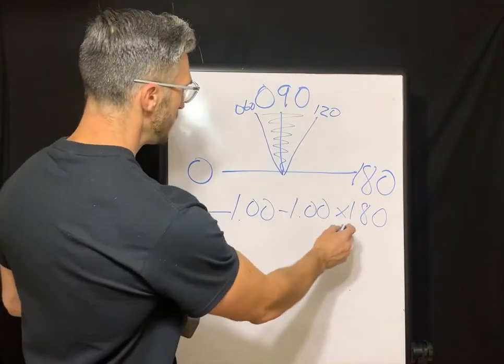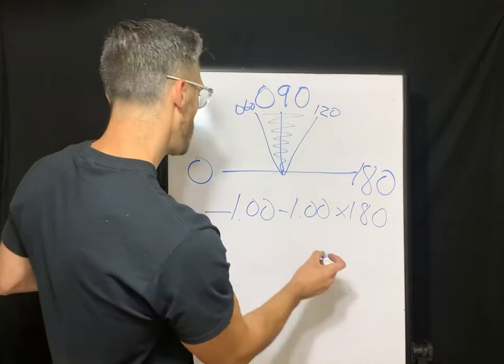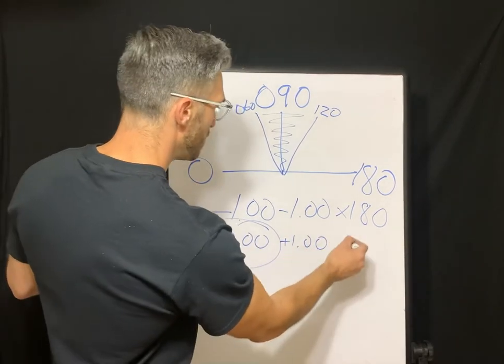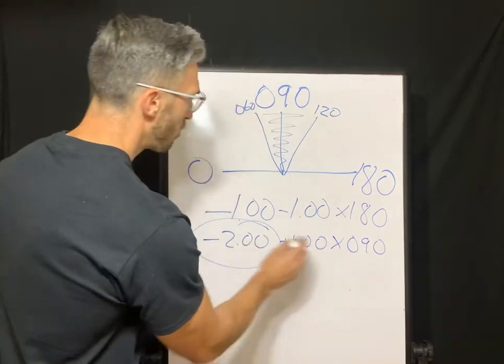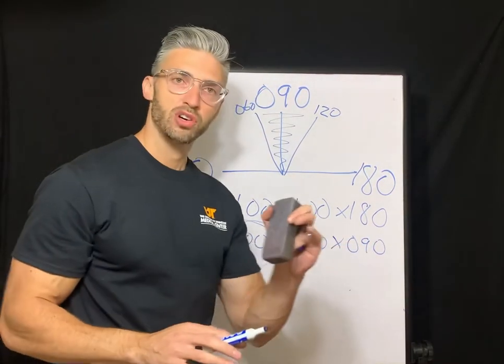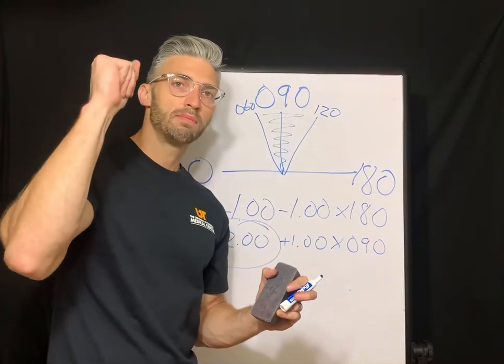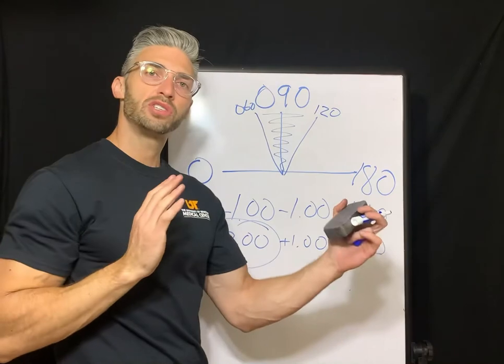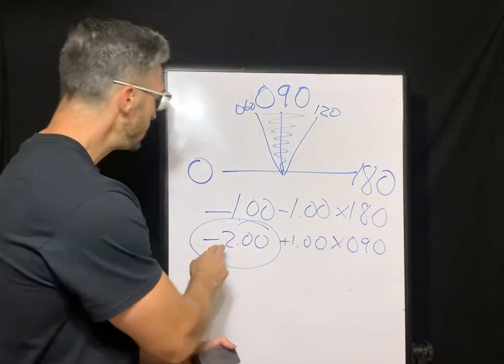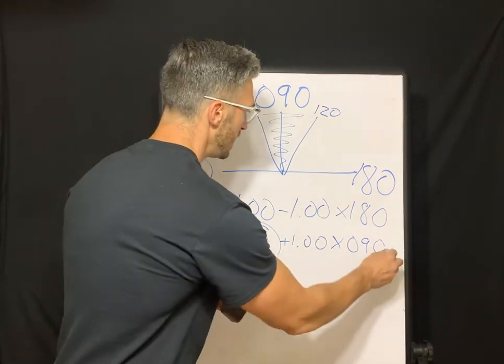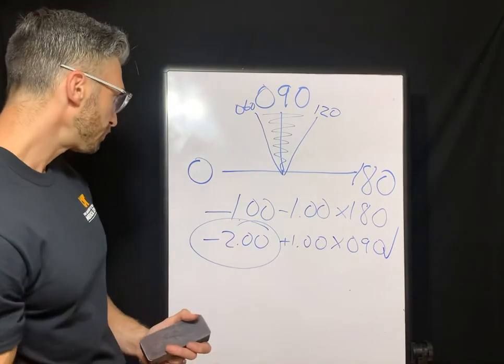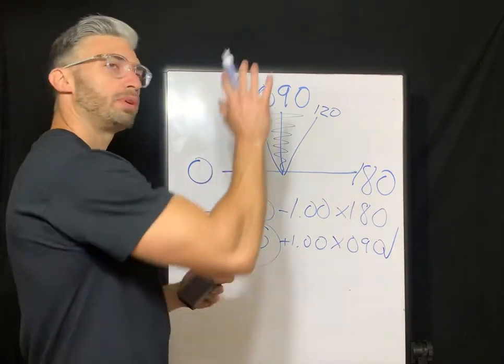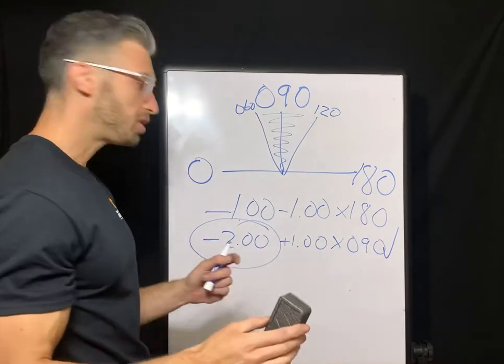This is just a classic with the rule astigmatism example. Because when we transpose this, which means to find the value 90 degrees away, so you get negative two is our new sphere power. But then we're going to rotate that 90 degrees. So our power at 90 is negative two. Here's where it gets a little tricky. The cornea must be the steepest or the most plus power along the 90. For us to need a minus two, think of it to neutralize all that plus power, you need more minus power, right?